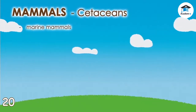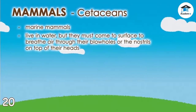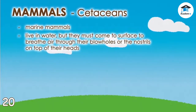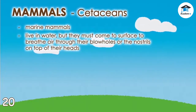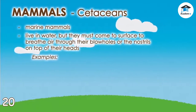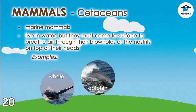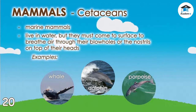Cetaceans are marine mammals. They live in water, but they must come to the surface to breathe air through their blowholes, or the nostrils on top of their heads. Cetaceans include whales, dolphins, and porpoises.